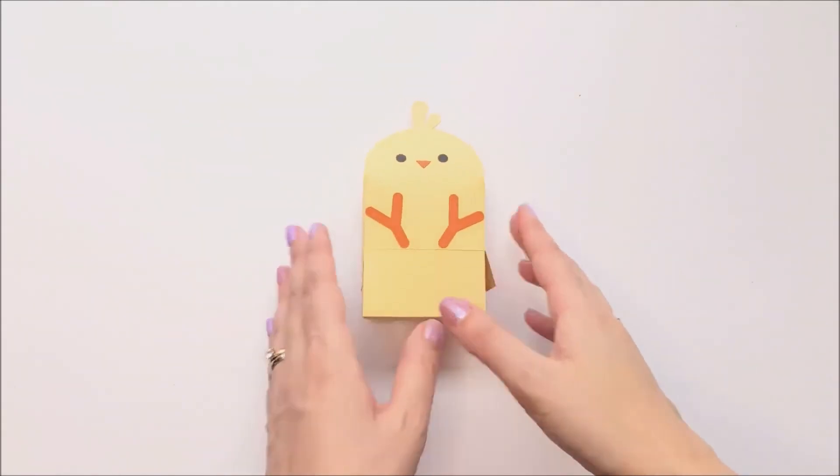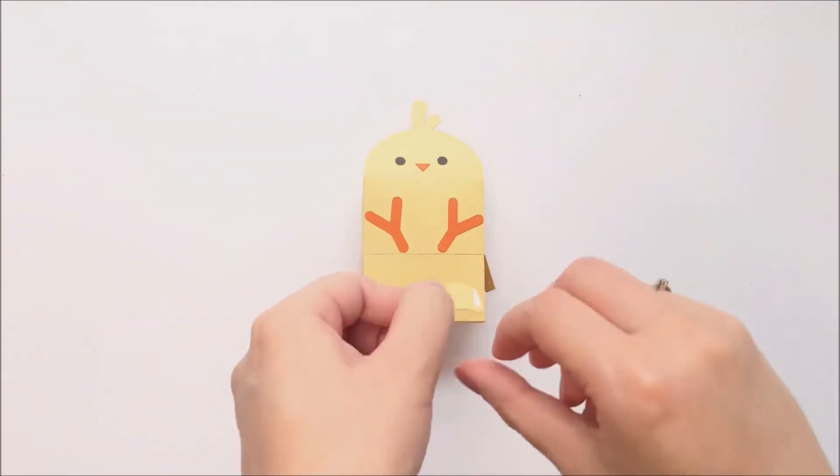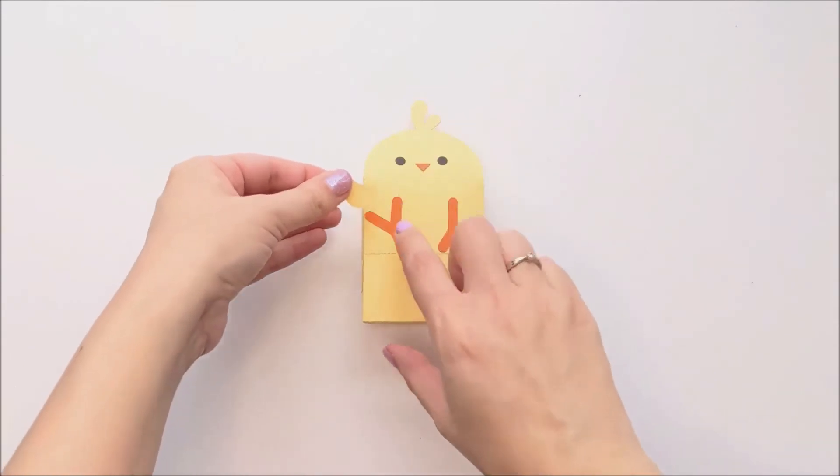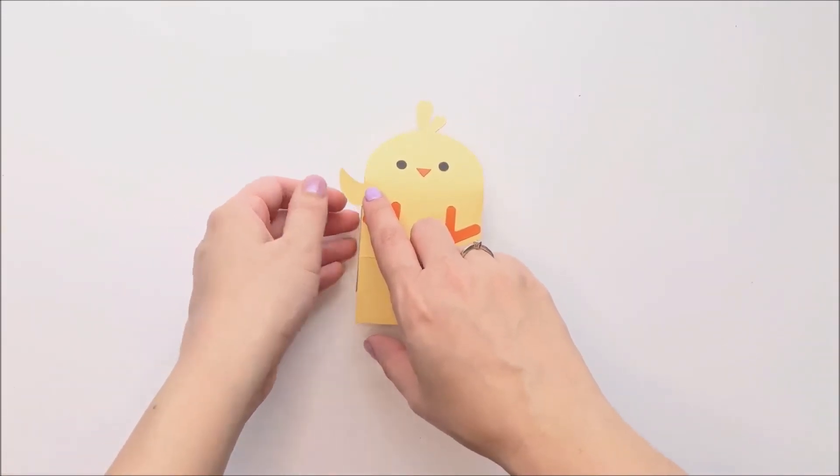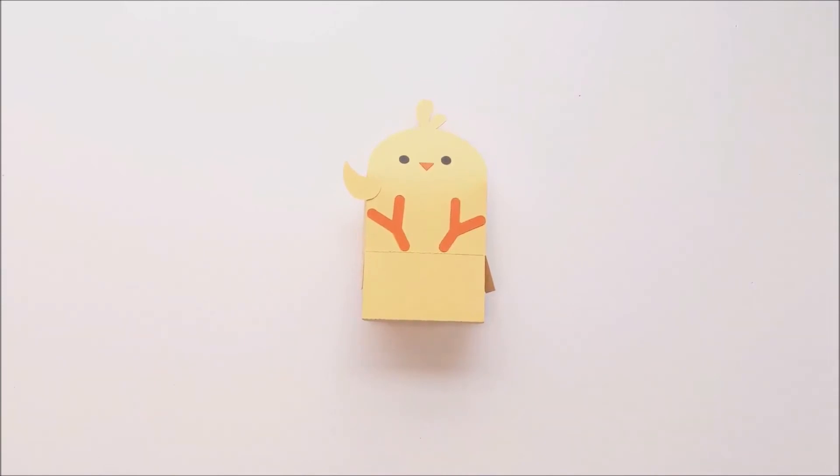Next we're going to glue down our wings. So I just add a little bit of glue to the curved side of the wing and then I can place it where I like on the front. And I'll repeat it with the other wing, trying to get it to match the other side.